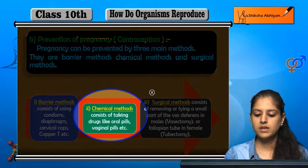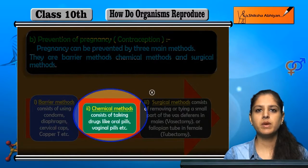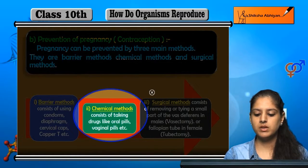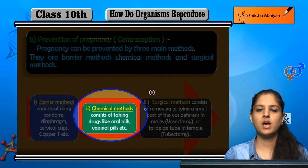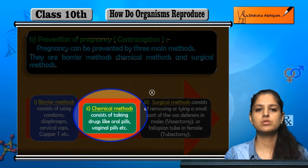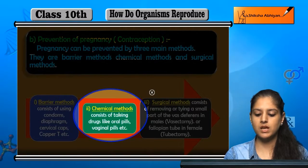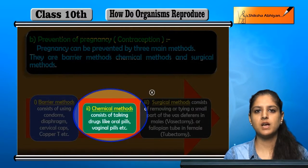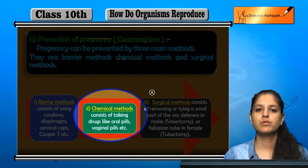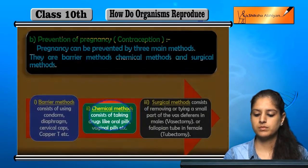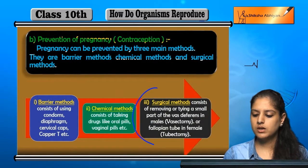Second hai chemical methods. Chemical methods mein kuch drugs aate hain, jaise ki kuch oral pills aate hain ya vaginal pills aate hain, jis mein egg formation nahi hoti ya phir fusion jo hai woh ruk jaata hai.